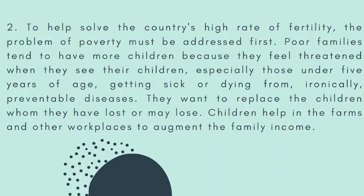Number two: 'To help solve the country's high rate of fertility, the problem of poverty must be addressed first. Poor families tend to have more children because they feel threatened when they see their children, especially those under five, getting sick or dying from preventable diseases. They want to replace the children they have lost or may lose. Children also help in farms and workplaces to augment family income.' This is an example of cause and effect — poverty is the cause, and high fertility is the effect.